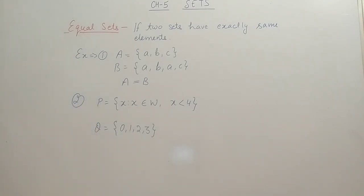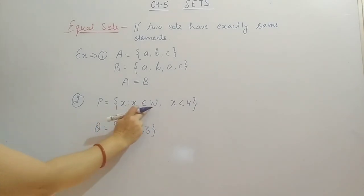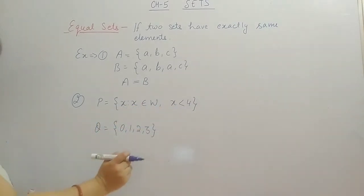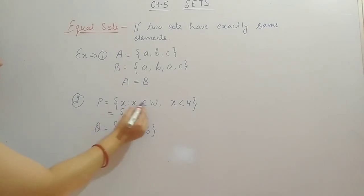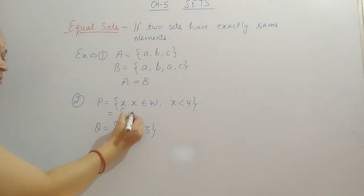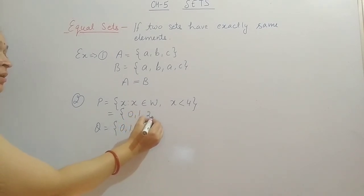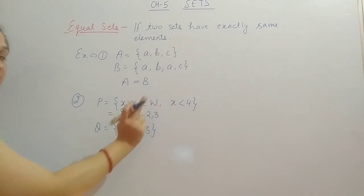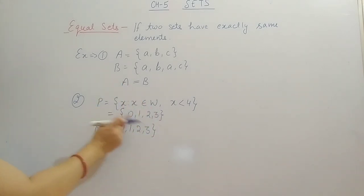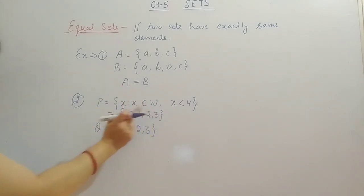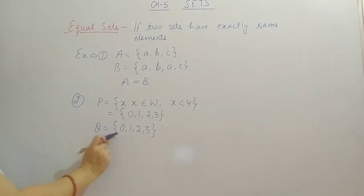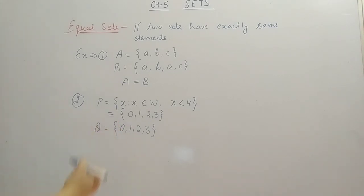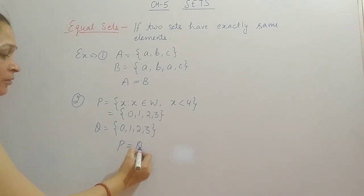Another example: P = {X | X ∈ W, X < 4}, where W is whole numbers. Whole numbers start from 0, so less than 4 gives us 0, 1, 2, 3. And Q = {0, 1, 2, 3} also has the same four elements. So P and Q have exactly the same elements — P = Q, they are equal sets.